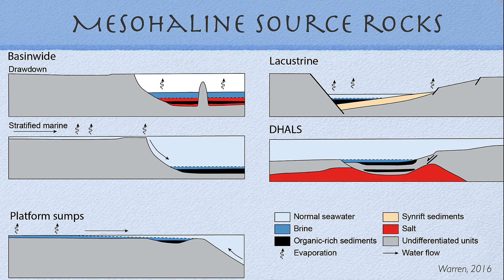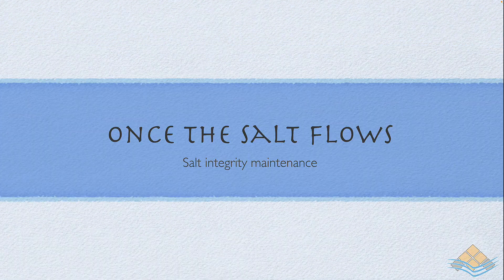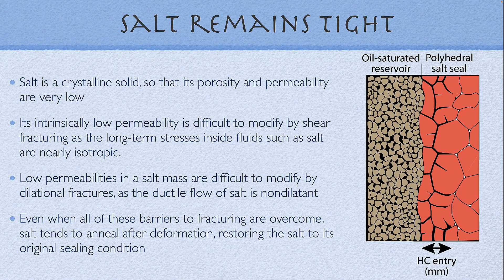We also know that there's a mesa-haline source rock association with many evaporite settings. Once the salt flows, the salt body itself — although its edges may be subject to dissolution — maintains its ability to seal. It maintains its seal integrity; in other words, the salt remains tight until it is dissolved or thins to the point where it can leak.